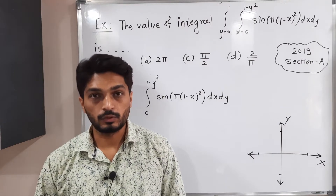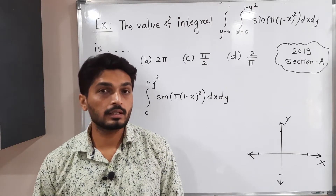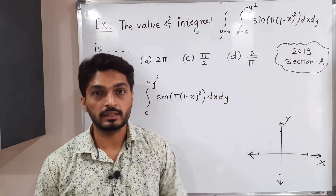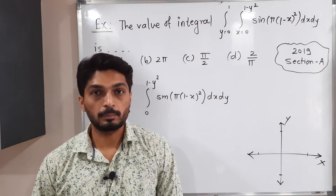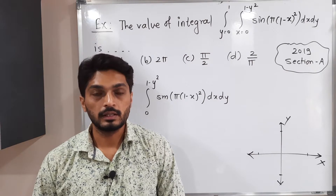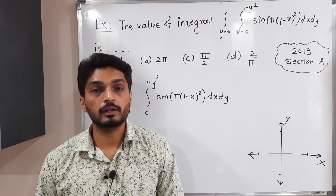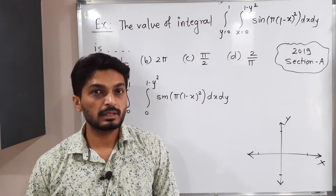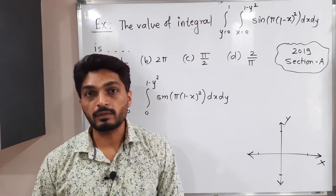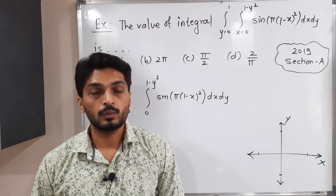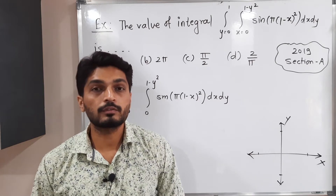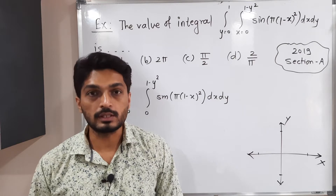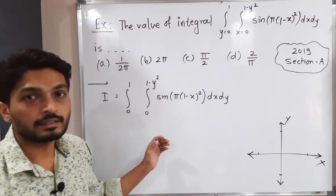Let us discuss this example which is asked in IIT JAM examination in the year 2019, in Section B. We have to find the value of a double integration. The four options are given, but this problem is a little bit complicated — we cannot find its value directly. We have to change the order of integration and solve, then we can easily get its value.